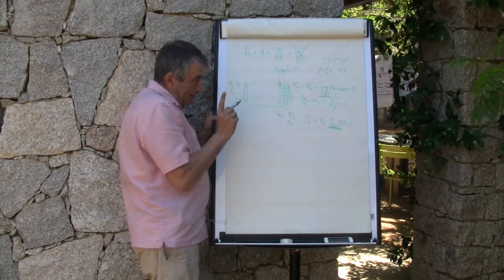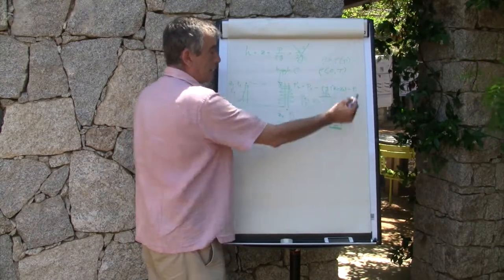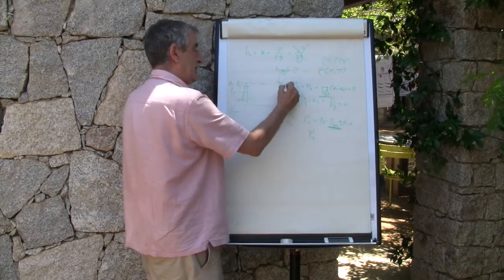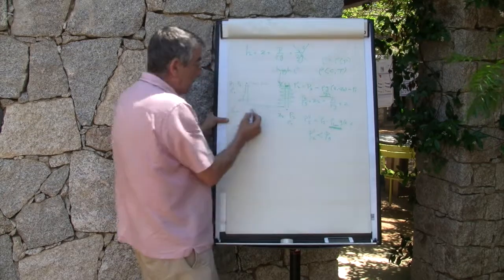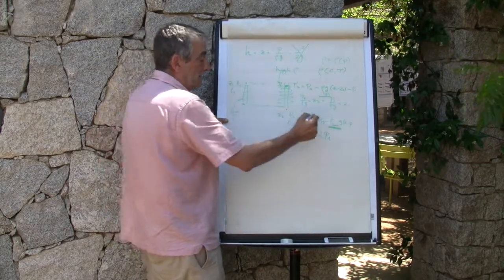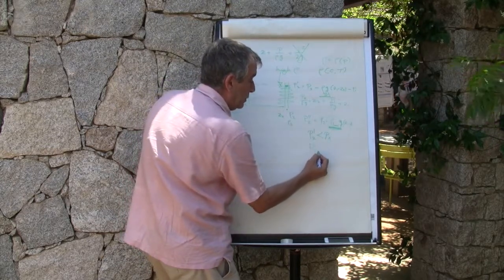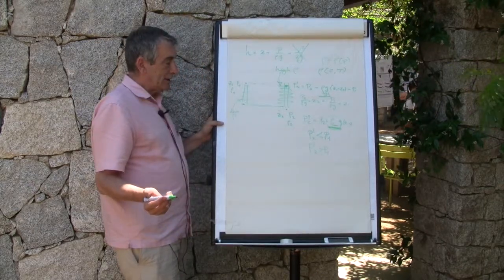So, what may happen? That P prime two, since I am subtracting a high number, P prime two, the pressure here, would be smaller than P1. While here, because density is low, P prime two would be larger than P1.